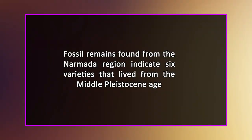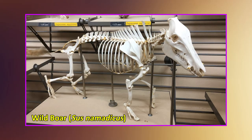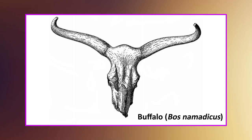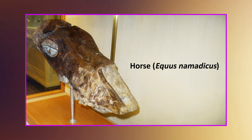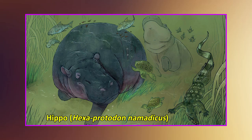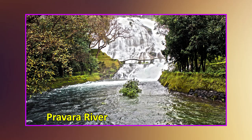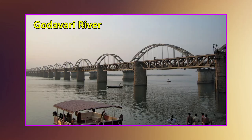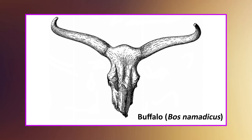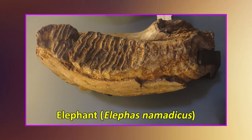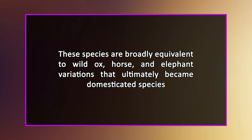The fossil remains found from the Narbada region indicate six varieties that lived from the middle Palaeocene age: Sus nomadicus, Bos nomadicus, Alphas hyzodricus, Aqueus nomadicus, Hexaprotodon nomadicus, and Stegadon insignis genetia. Similarly, fossils from the Pravara River, a tributary of the Godavari, produce evidence on Bos nomadicus, Aqueus nomadicus, and Alphas nomadicus.